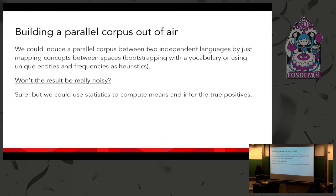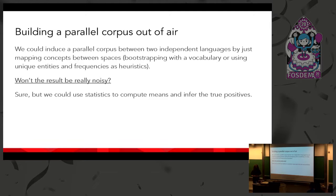A legitimate question: won't the result be really noisy, with lots of false positives? Yes — but we can use statistics to compute how many times 'house' seems to align with 'dog' versus 'casa', and infer true positives while throwing away false positives.